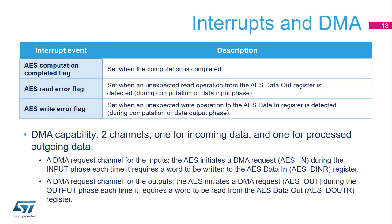Here's a summary of the events able to trigger an interrupt in the nested vectored interrupt controller: AES COMPUTATION COMPLETED, AES READ ERROR and AES WRITE ERROR.